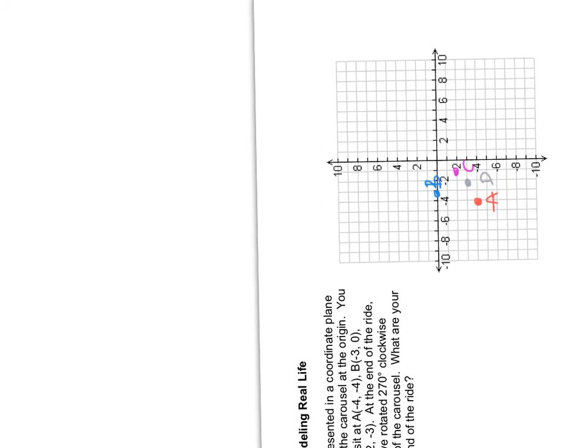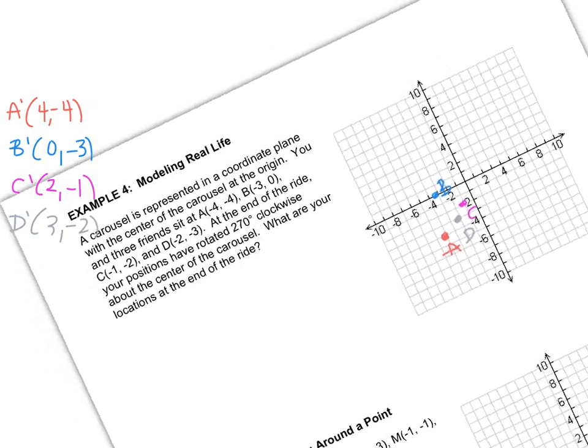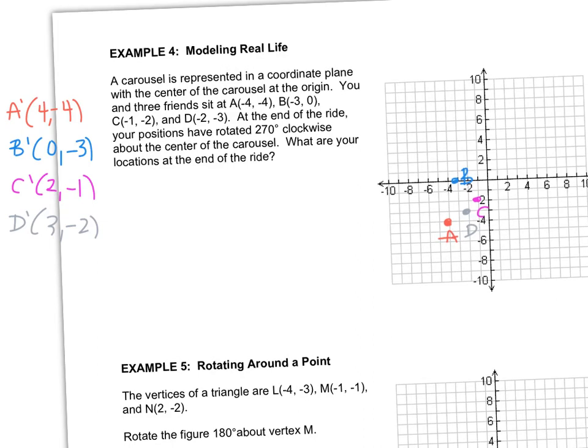And A is at 4, negative 4. I didn't get rid of the numbers, but just pretend they're not there. B is now at 0, negative 3. C is now at 2, negative 1. And D is now at 3, negative 2. So let's turn our paper back. And they actually don't even want us to plot the points. So that is the answer.